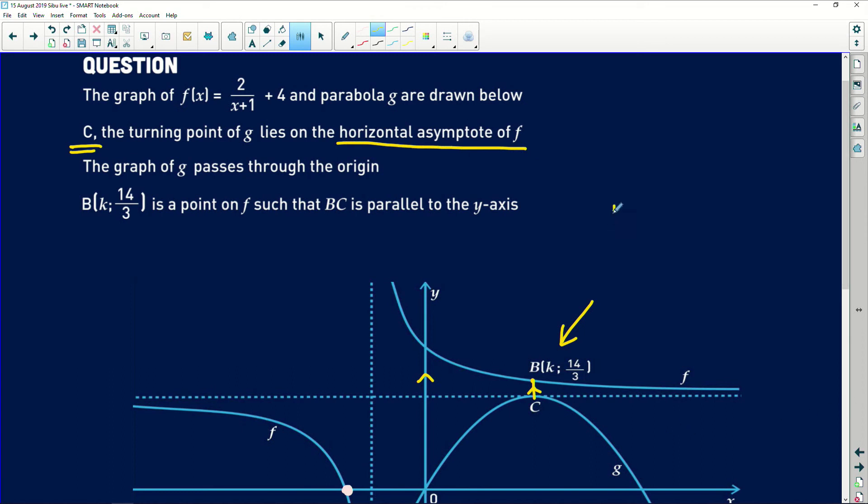So that simply means the point c has the same y coordinate as the horizontal asymptote. And the horizontal asymptote is the line y = 4. So which means the y value at c is simply equal to 4. However, what is the x value there at c? If you think back, we were told that BC is parallel to the y axis. What does that mean? Whenever you say a particular line is parallel to the y axis, it means its x value is not changing. So the x at all the points of that line are the same. So the x value at B will be the same as the x value at c.